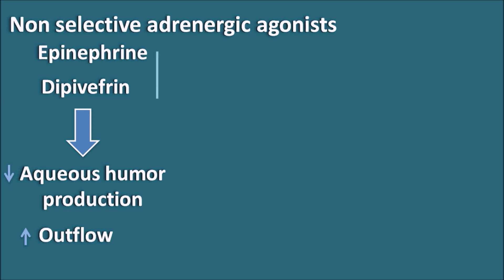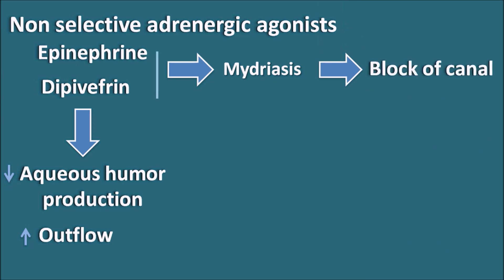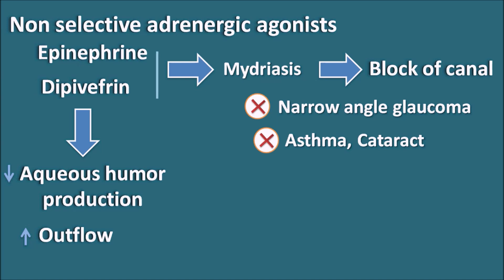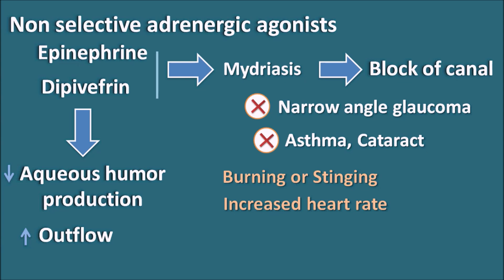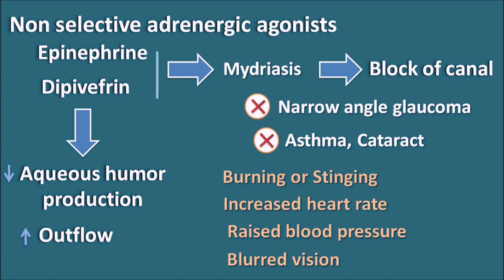However, epinephrine and dipivefrine produce pupillary dilation (mydriasis), which can block the canal of Schlemm through which aqueous humor drains. Therefore, these drugs are not suitable in narrow angle glaucoma where there is already a block in drainage. They are also not suitable in patients with asthma or cataract. Side effects include burning or stinging in the eye, increased heart rate (tachycardia), raised blood pressure, and blurred vision.